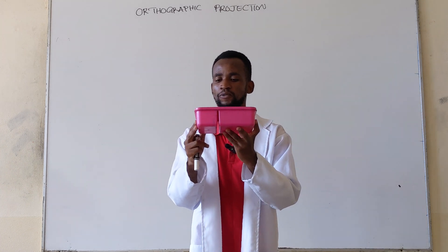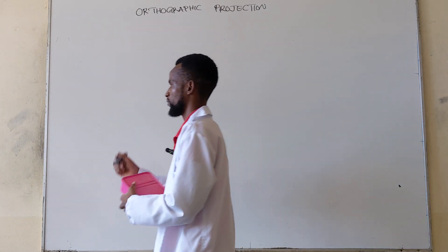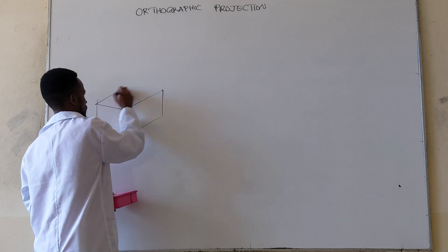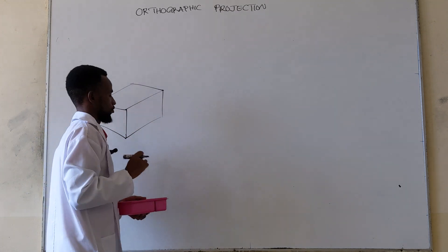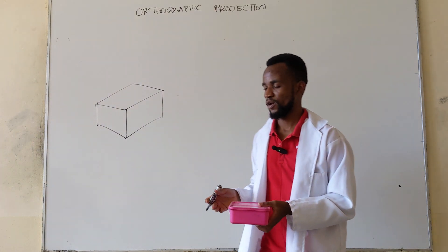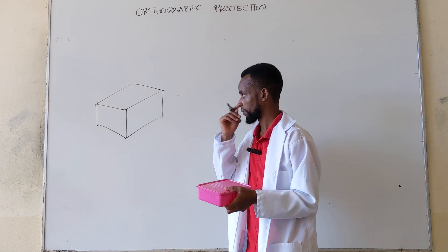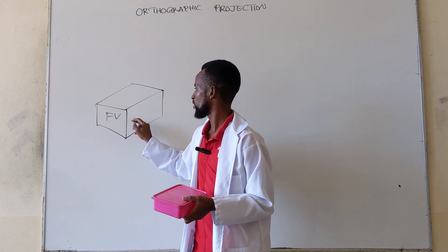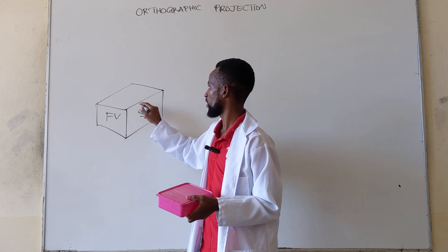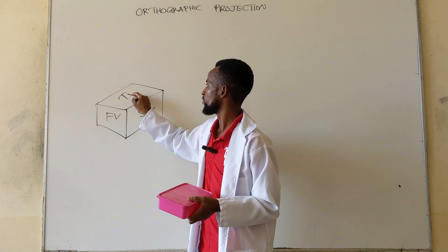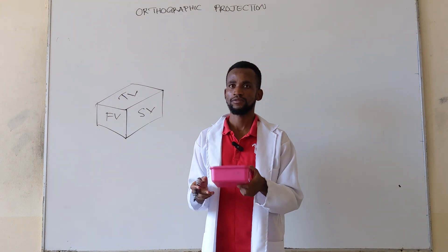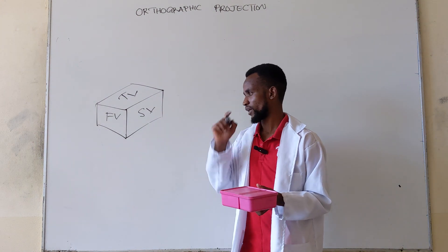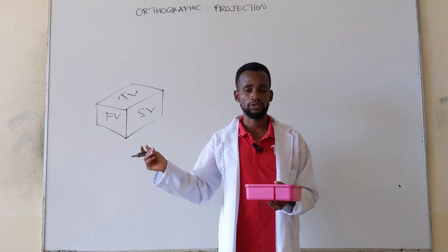We can draw this isometric box here — a rough sketch of what this will look like. If you say this is the front view, and that is the side view or the end, and then the top view like that, we have three views from this 3D object in one isometric object like that.